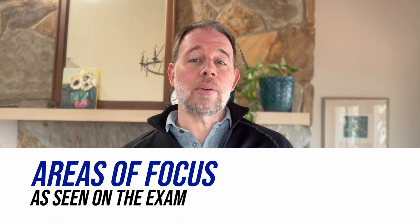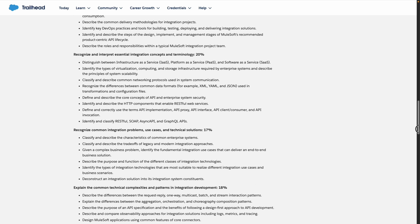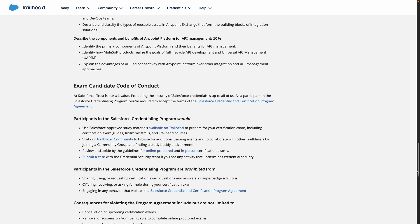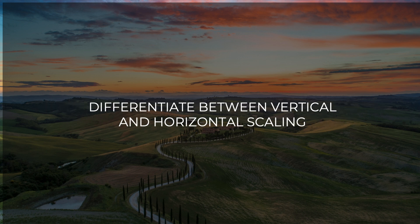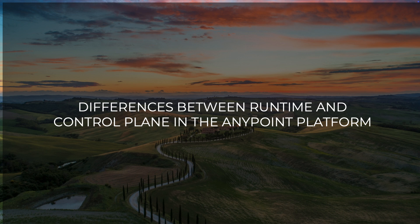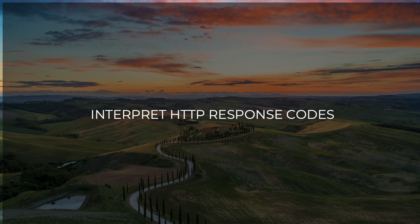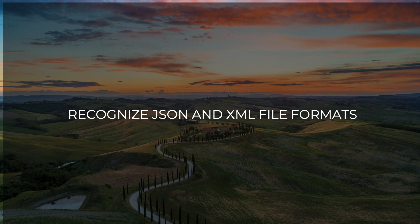Regarding areas of focus, I would start with the exam guide — it provides a nice high-level roadmap of the exam and it's fairly comprehensive. Here are some of the concepts I saw represented on the exam: compare the benefits and challenges of the microservice versus the monolithic architecture approaches; differentiate between vertical and horizontal scaling; explain the role of service mesh versus API gateway; identify the differences between runtime and control plane in the AnyPoint platform; interpret HTTP response codes accurately; explore the concepts of API design first and code first approaches; and recognize the file formats of JSON and XML.